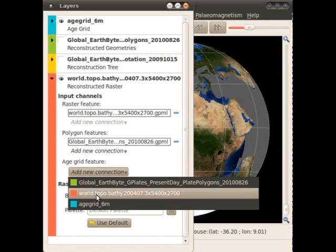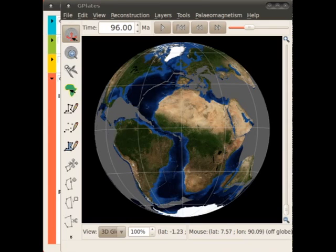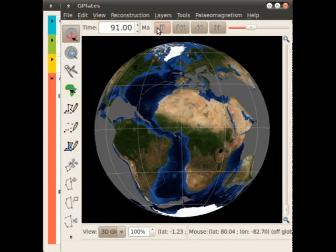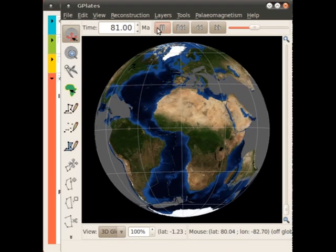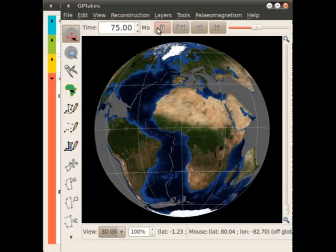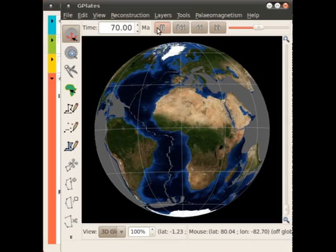For smoother reconstruction, you can also connect an age grid to the raster layer. Don't worry if you don't have an age grid or a static polygons file. We've provided sample ones with the data bundle that comes with GPlates to help get you started.